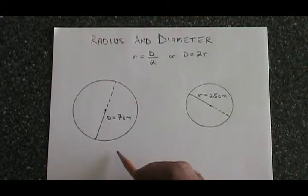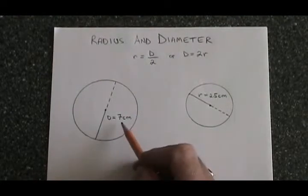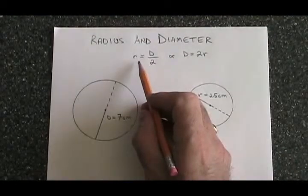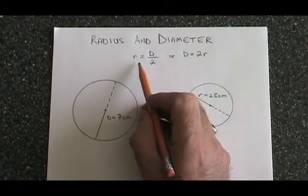So if you know the diameter is 7 cm, you can calculate the radius using this formula. Let's try it.